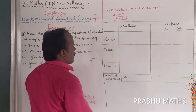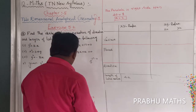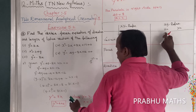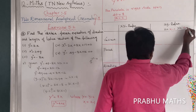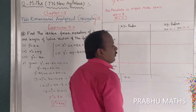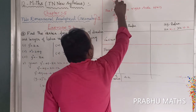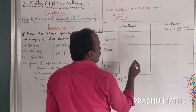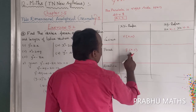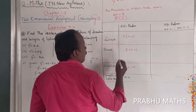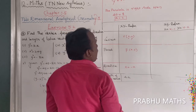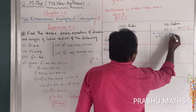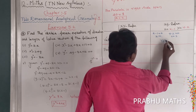For the standard form, the vertex is at (0, 0) in the shifted coordinates. Substituting back: x minus 1 equals 0 gives x equals 1, and y minus 2 equals 0 gives y equals 2. Therefore, the vertex is at (1, 2).